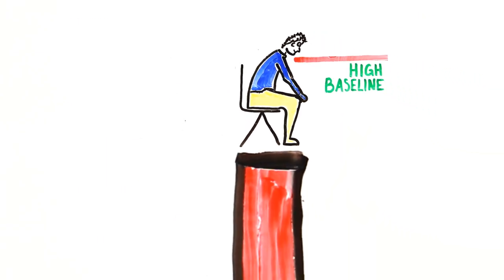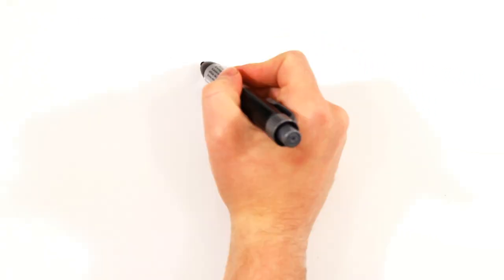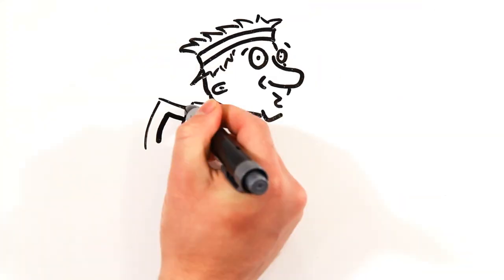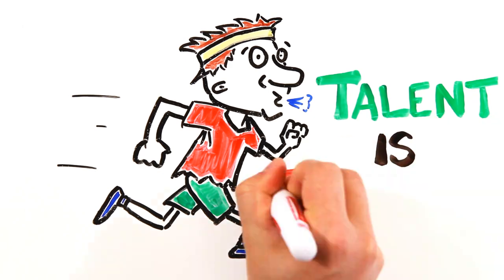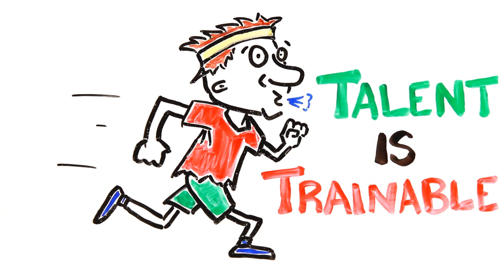So you can have a high baseline or high trainability or both. And it's likely that our greatest athletes train as hard as they can on top of having some great genetics. It seems that talent is trainable under the right circumstances.